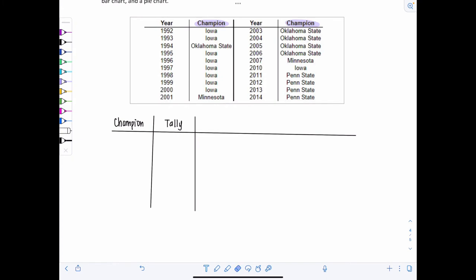So what are the different champions that we see? I see Iowa, Oklahoma State, Minnesota, and lastly, Penn State. Just four. Now let's tally up how many times each of these teams was the champion. So Iowa, one, two, three, four, five, six, seven, eight, nine. Yes, nine. Oklahoma State, one, two, three, four, five. Minnesota, one, two times. And then Penn State, just four times.